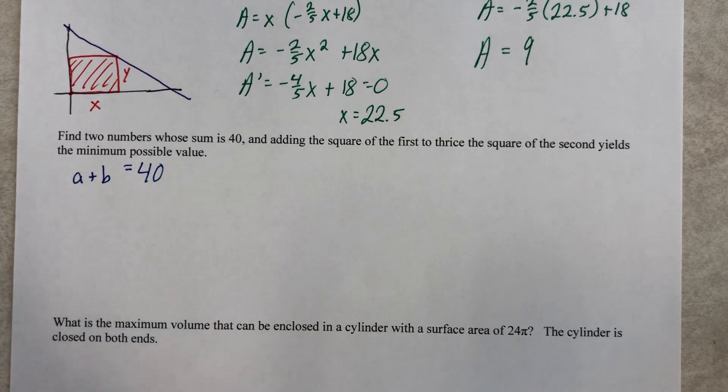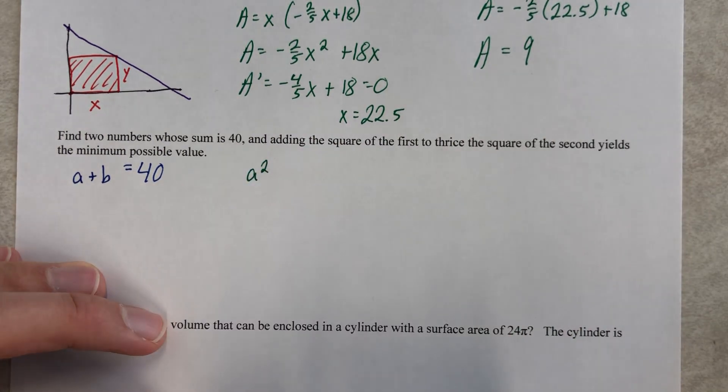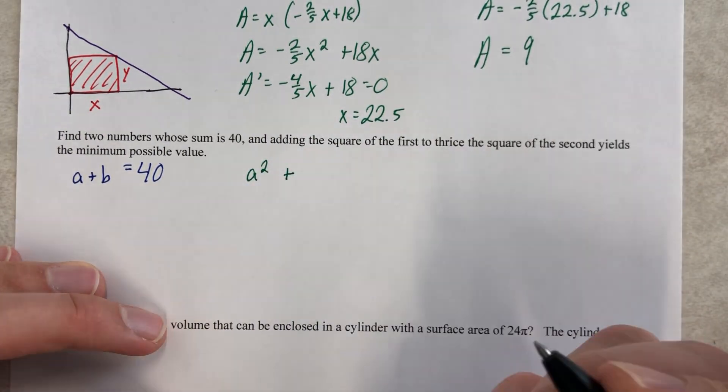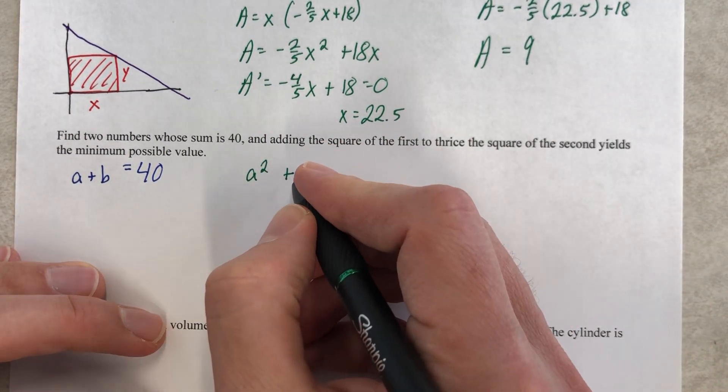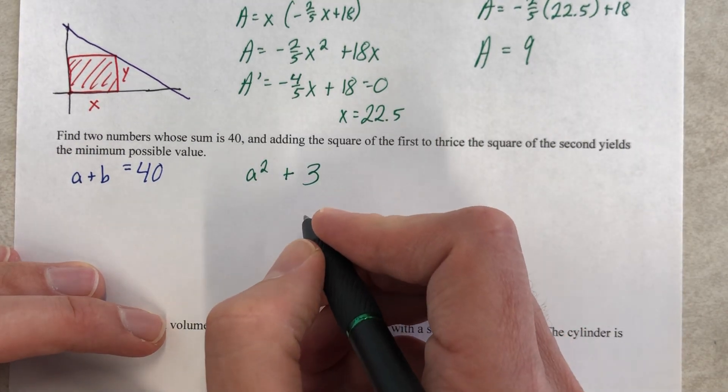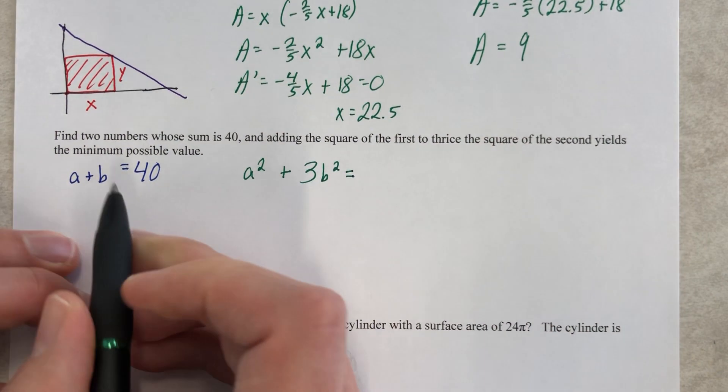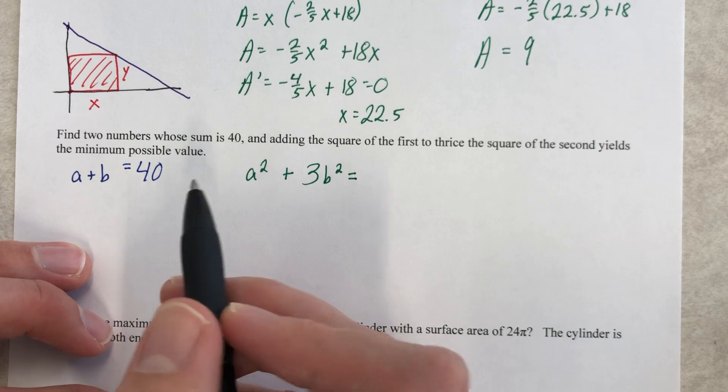Here's what I don't know. And when you read, you'll realize what you don't know. Adding the square of the first number to, I love this word, thrice. That means three times. Thrice the square of the second number yields the minimum possible value. What is that value?